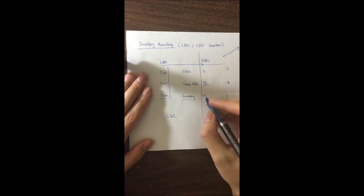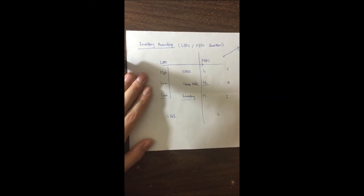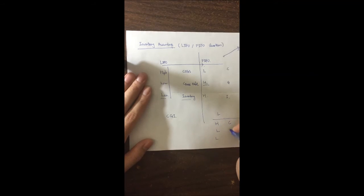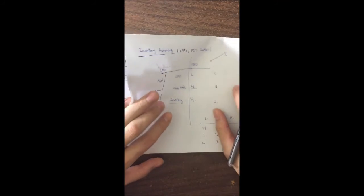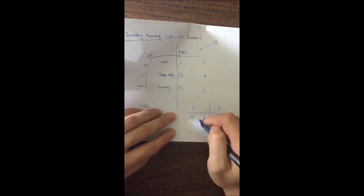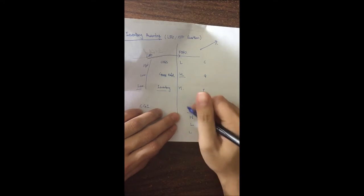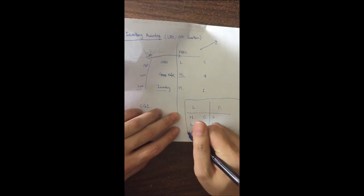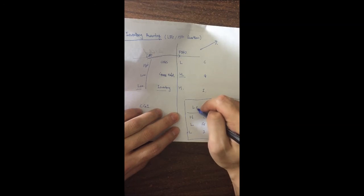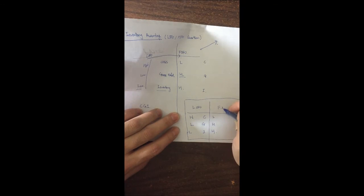So to recap: remember L-F for LIFO/FIFO, then H, L, L and C, G, I — draw a horizontal arrow, make sure you can see it on the screen, and then the mirror image on the FIFO side is L, H, H. This is literally the only thing you have to know about FIFO and LIFO on the CFA Level 1 exam.